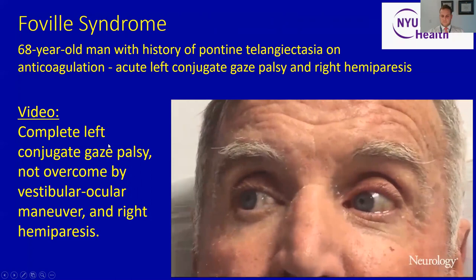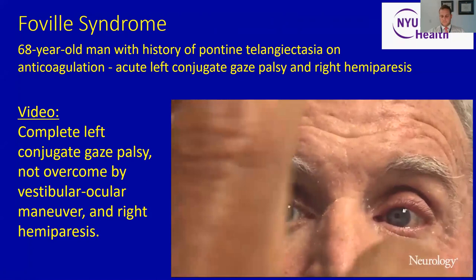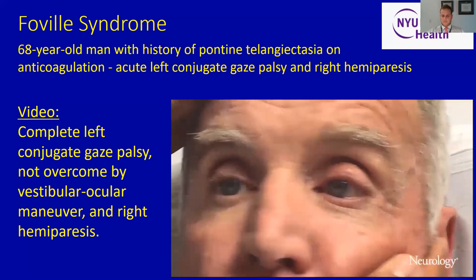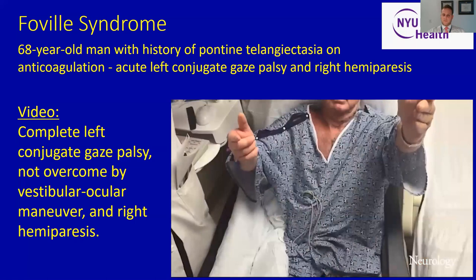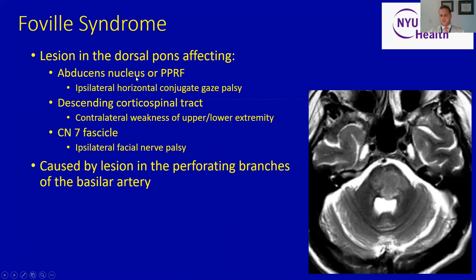Here we see preserved gaze to the right but diminished conjugate gaze to the left that is not overcome by VOR. Preserved to the right. He also has a right-sided hemiparesis. This lesion in the dorsal pons can affect the abducens nucleus or PPRF, leading to ipsilateral conjugate gaze palsy, as well as the corticospinal tract and cranial nerve 7 for facial weakness. Often this is caused by a lesion in the perforating branches of the basilar artery, running in the midline and feeding the pons.